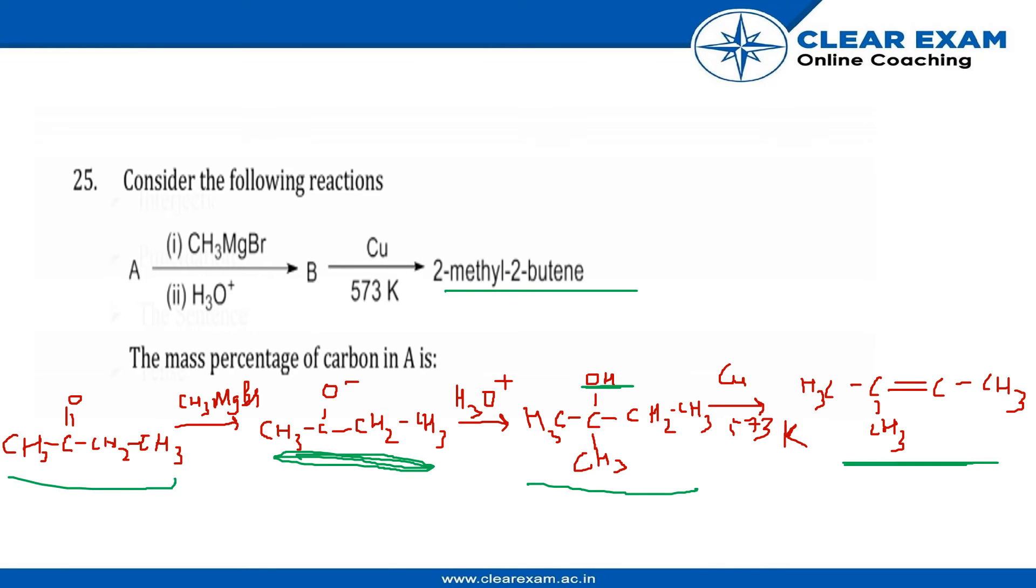So this is what the initial compound looks like. This is A. This is the formula for A and it is known as butanone.